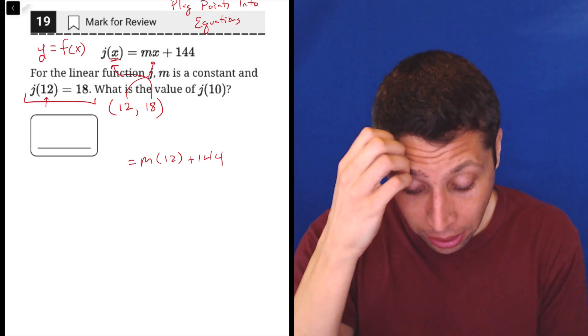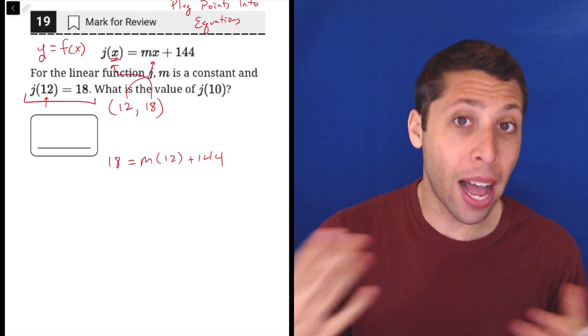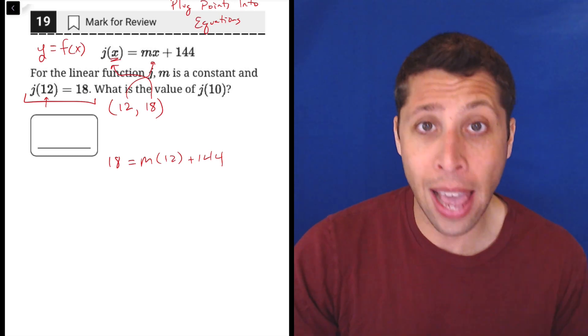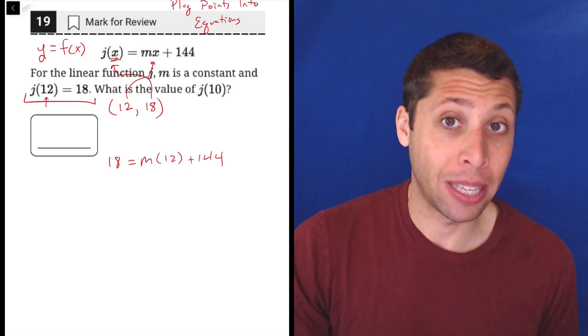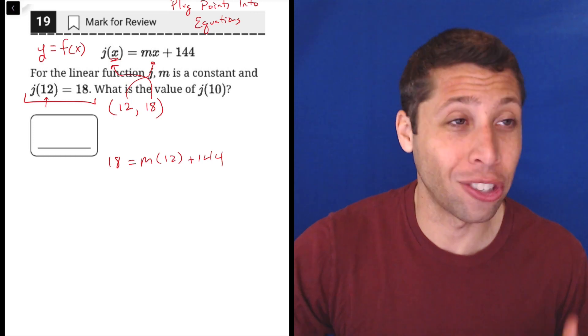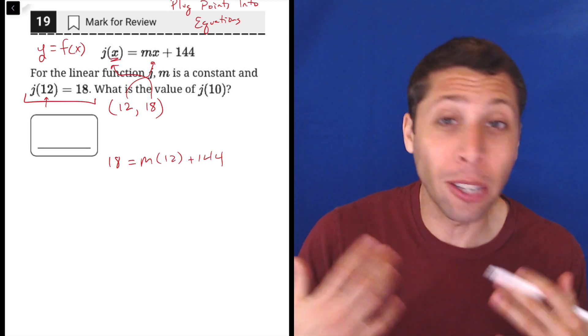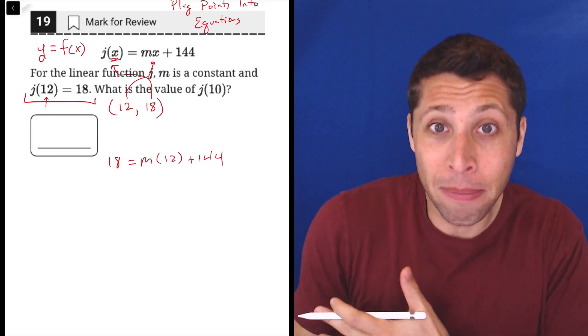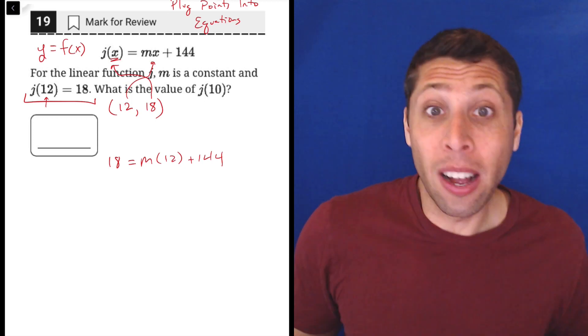So now if I put that in, I can see that I've got a pretty simple algebra situation here. I have one variable missing, this m. Now I know they don't ask for m at the end, but this is a good example of why plug points into equations is such a powerful strategy. Sometimes it just gives us something to do, and it's almost always the right thing to do. So our goal here is like, well, I've got this m, I don't know it, but I can solve for it, so let's do it, right?